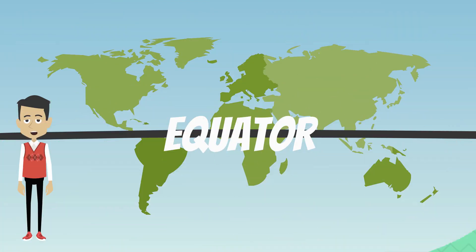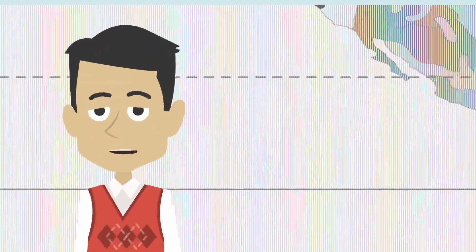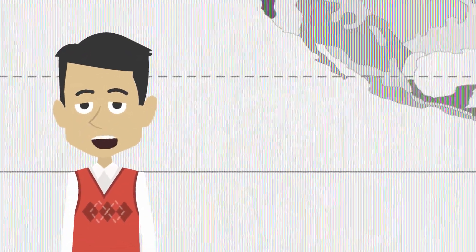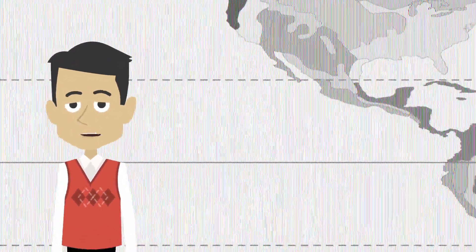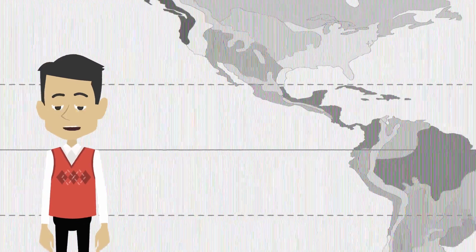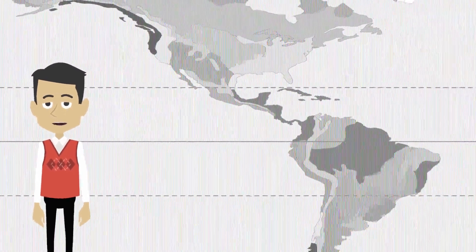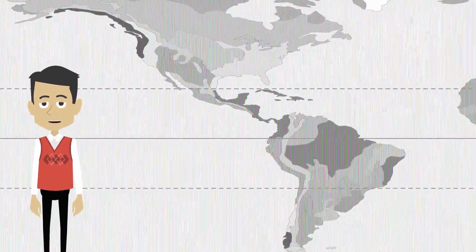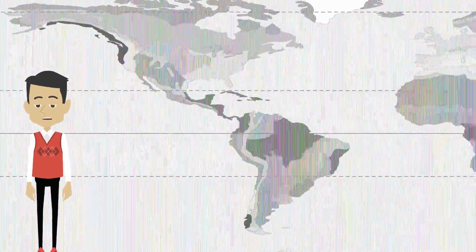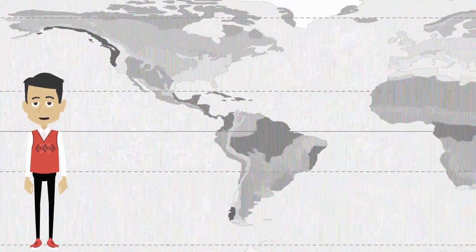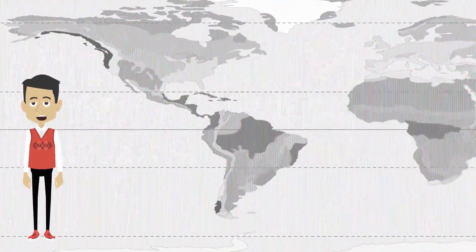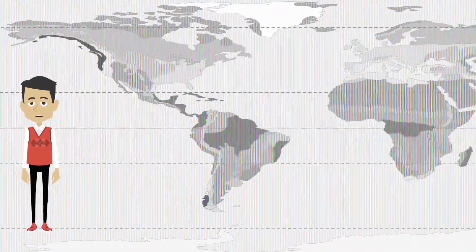On Earth, there is an invisible line known as the equator. It divides the northern and southern hemispheres. The map behind me is very unique in that there are many different colors displayed all over the Earth. Each color represents a different biome, a different climate, where plants and animals have adapted to survive.